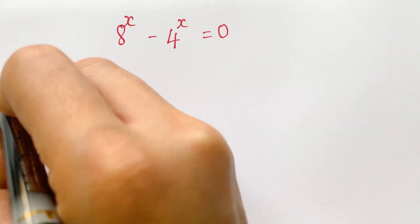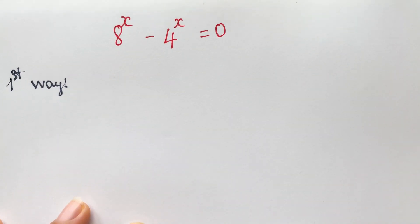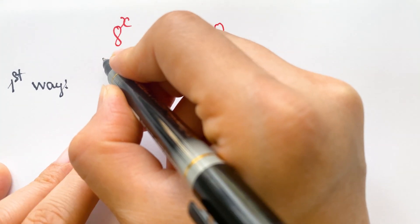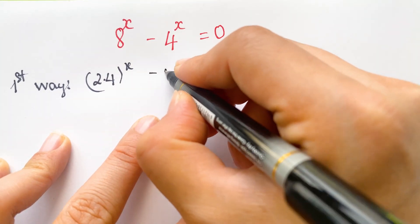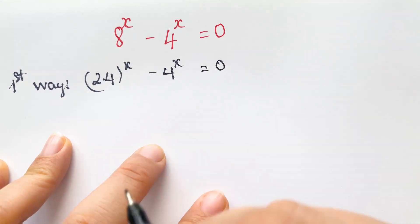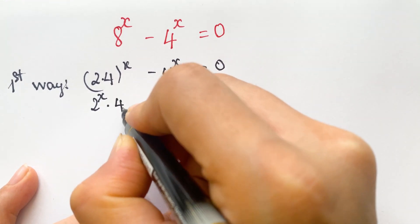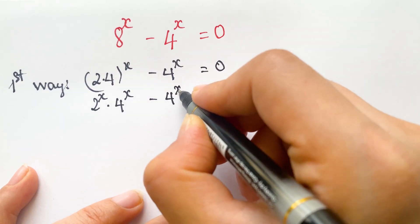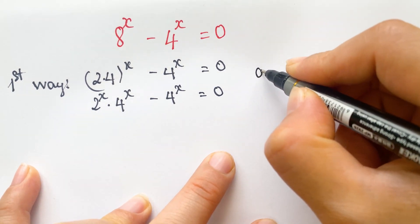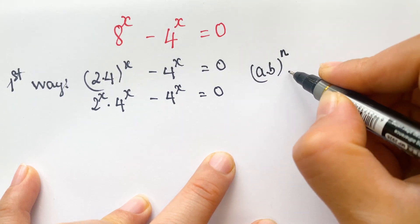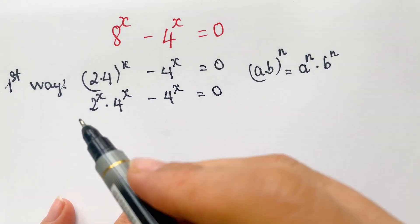First way: for 8 power x, you need to break down — 8 is equal to 2 times 4 — so we get 2 times 4 power x minus 4 power x is equal to 0. Then we have 2 power x times 4 power x minus 4 power x is equal to 0, because we apply the exponential rule: (a times b) power n is equal to a power n times b power n.